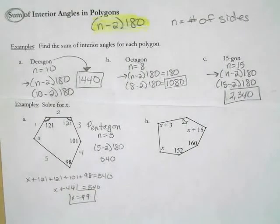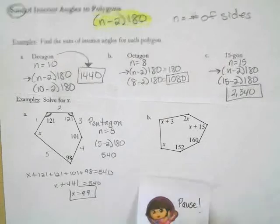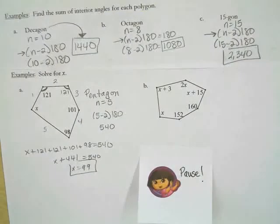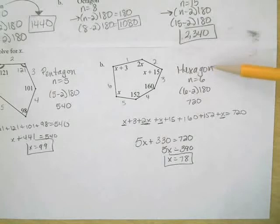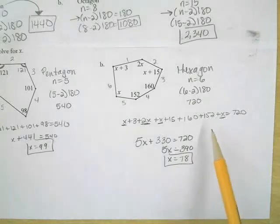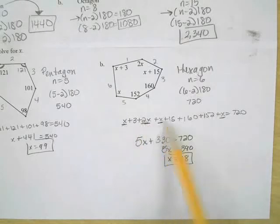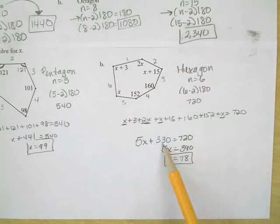For problem B, first identify what type of polygon it is, find the sum, then add up all the angles to equal that sum. There are six angles, so this is a hexagon. N is 6: 6 minus 2 times 180 is 720. Writing the equation and combining: 5x plus 330 equals 720. Subtracting 330 from both sides gives 5x equals 390. Dividing by 5, x equals 78.